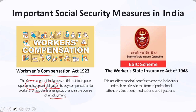Another important measure is the Workers State Insurance Act of 1948, which was enacted to offer medical care and job security to industrial employees who were ill. The ESI scheme offers medical advantages to covered individuals and their relatives in the form of professional attention, medication, treatment, and injections when the option has been provided to the household as well.